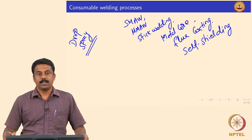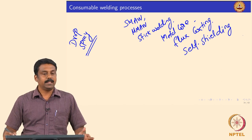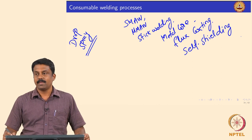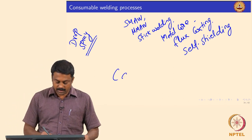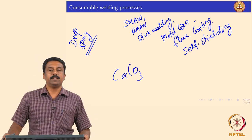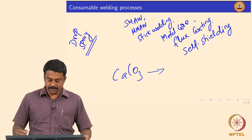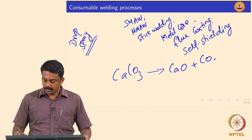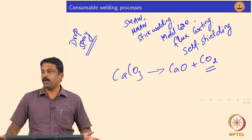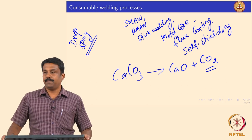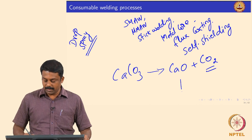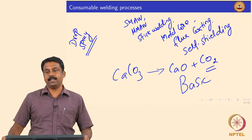SMAW is called self-shielding because the shielding gas is generated by the decomposition of the flux. Generally, the flux contains elements that dissociate or decompose to generate gases. For example, flux containing calcium carbonate (CaCO₃): when heated, it decomposes into calcium oxide (CaO) plus carbon dioxide (CO₂). This CO₂ generates the required shielding and arcing gas needed for striking an arc and protecting the weld pool.